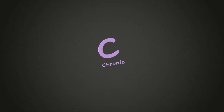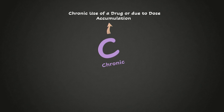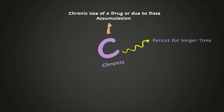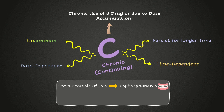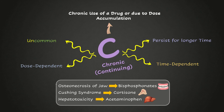Moving forward to type C reactions or chronic type reactions. They may occur due to the chronic use of a drug or due to dose accumulation. They persist for a relatively longer period of time, which is why they are often referred to as continuing reactions. They are fairly uncommon and usually dose and time dependent. Type C reactions often include osteonecrosis of the jaw with bisphosphonate therapy, Cushing syndrome associated with cortisone use, or hepatotoxicity associated with acetaminophen, commonly known as paracetamol.